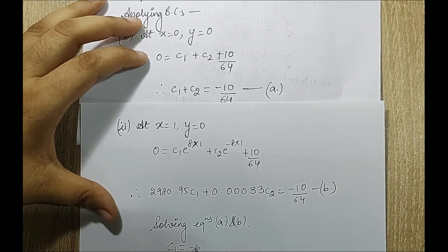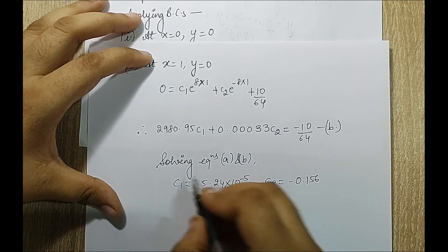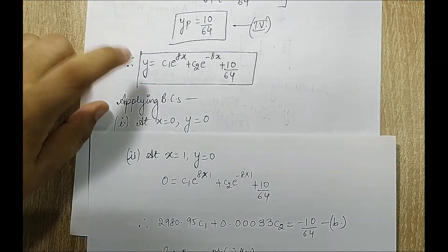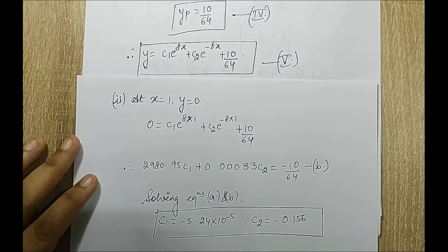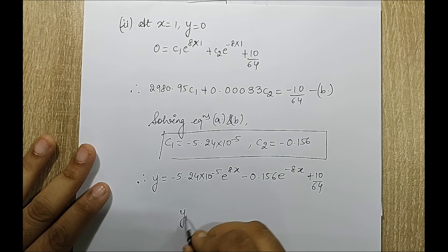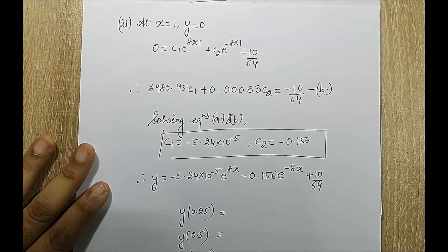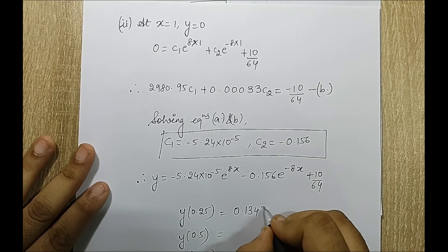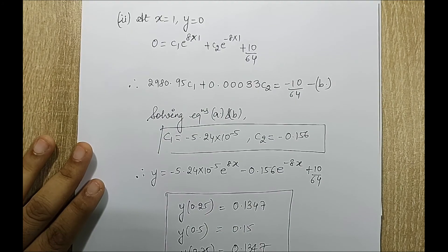Solving equations (a) and (b), I get c1 equals minus 5.24×10^(−5) and c2 equals minus 0.156. Substituting into equation 5: y equals minus 5.24×10^(−5)·e^(8x) minus 0.156·e^(−8x) plus 10/64. Evaluating at the required points: y(0.25) equals 0.1347, y(0.5) equals 0.15, and y(0.75) equals 0.1347. These are the exact solution values.